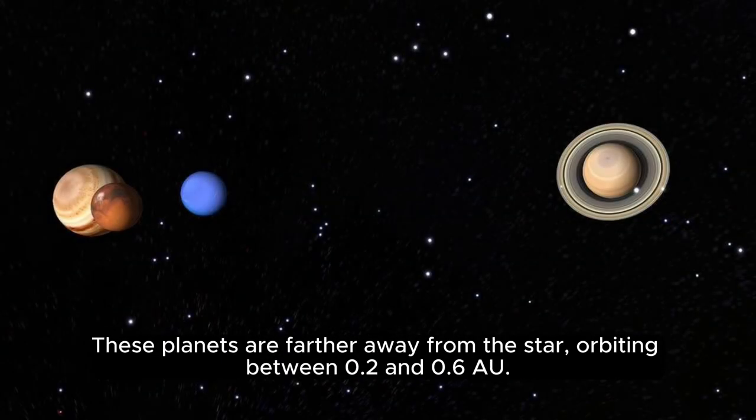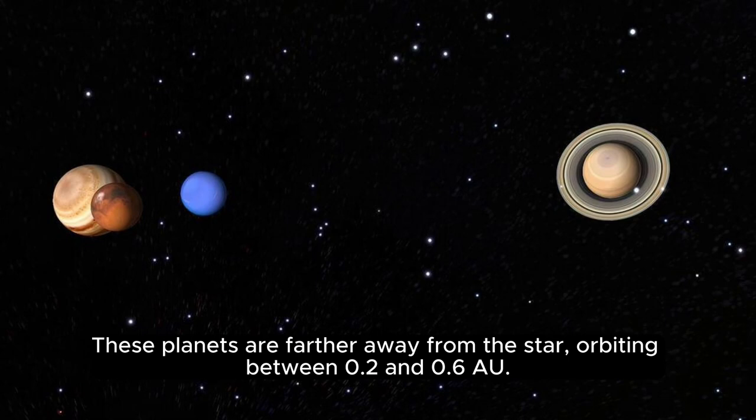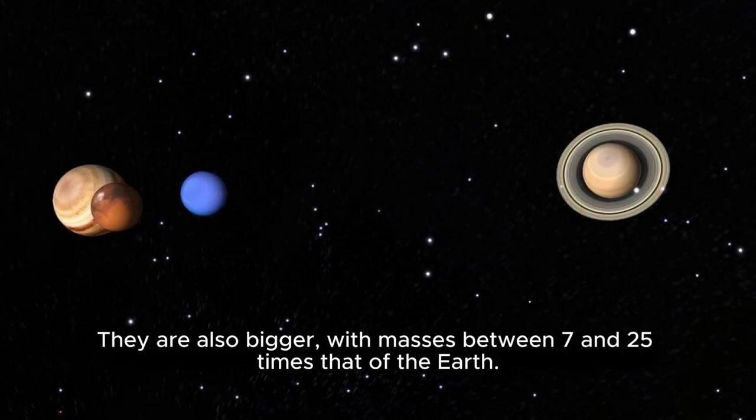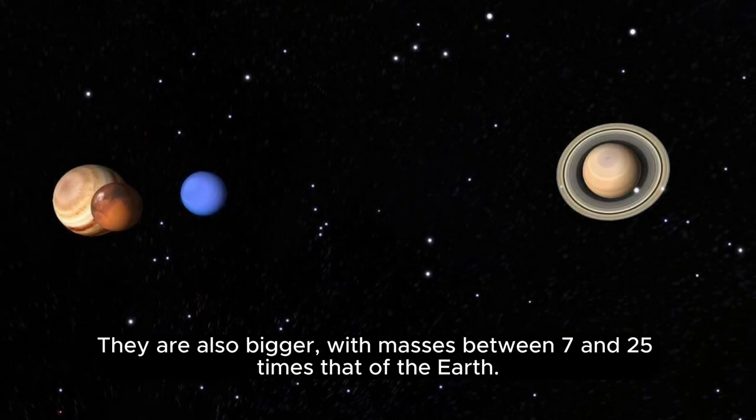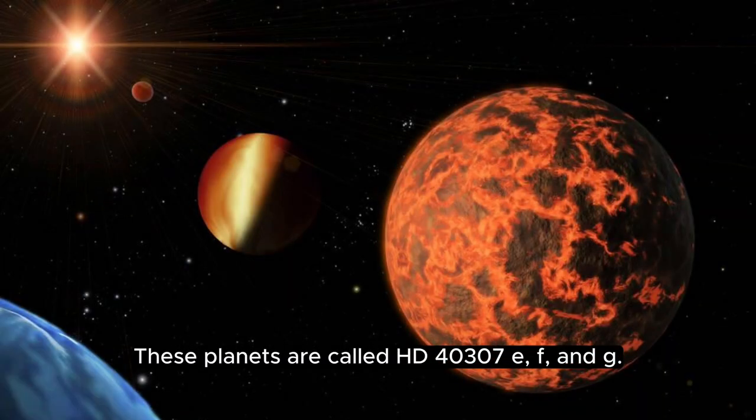These planets are farther away from the star, orbiting between 0.2 and 0.6 AU. They are also bigger, with masses between seven and 25 times that of the Earth. These planets are called HD 40307 E, F, and G.